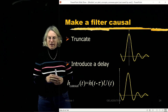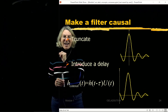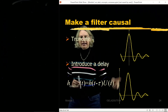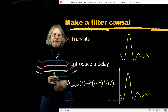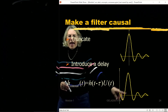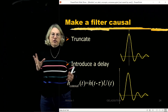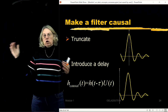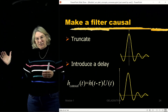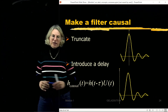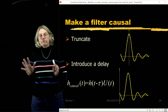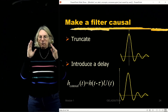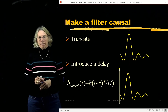Step two is to introduce a delay. After truncation it's zero for many negative values of t, but not all. I introduce a delay so that wherever I truncate becomes the new t0. Now I have a causal system. How close is the approximation to the ideal? The farther I let the truncation go, the closer the approximation — but a later truncation means a bigger delay. So it's a trade-off in any real system, but we can always make a filter causal by truncating it and introducing a delay.